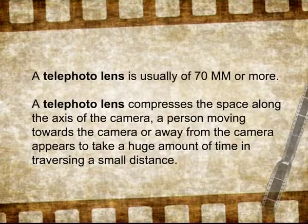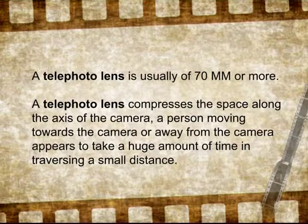Because a telephoto lens compresses space along the axis of the camera, a person moving towards or away from the camera appears to take a huge amount of time traversing a small distance. To summarize the three lens types: the shorter the focal length, the more exaggerated the space in front of the camera; and the longer the focal length, the shallower is the perception of depth.